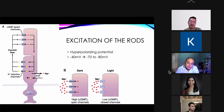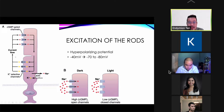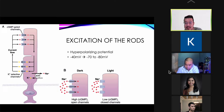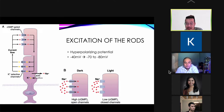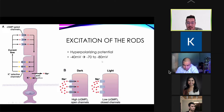The resting membrane potential of rods and cones is minus 40 mV. When there is an action potential, it becomes minus 70 to minus 80 mV — it becomes more negative. This is a hyperpolarizing potential because the inner segment has a sodium-potassium pump (3 sodium out, 2 potassium in), and potassium leaks out through leaky potassium-selective channels, making the inside of the cell negative.